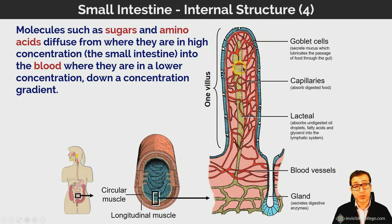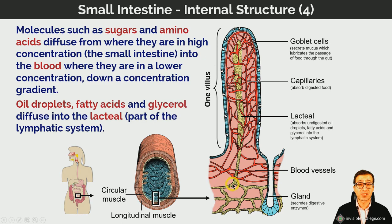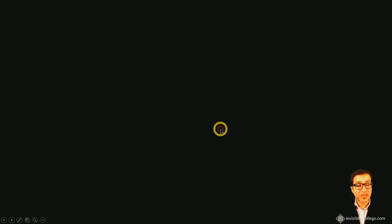Some substances such as glucose are actively transported. Oil droplets, fatty acids, and glycerol diffuse into the lacteal rather than the blood vessels; the lacteal is part of the lymphatic system, a system of tubes distributed throughout the body. That's it for this lesson — I hope it was useful. I'll now go into the Q&A discussion segment with the students in attendance, and I'll see you in the next one.